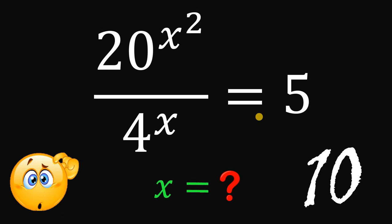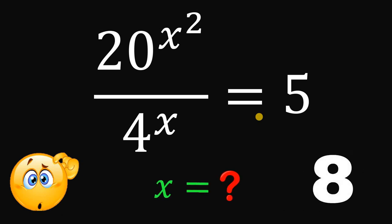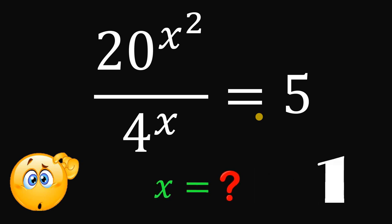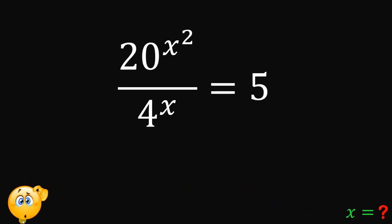You can pause this video if you want to give this problem a try. Now let's answer this question together. Given this equation — 20 raised to the power of x squared over 4 raised to the power of x equals 5 — our goal is to solve for the real value of x that satisfies this equation.